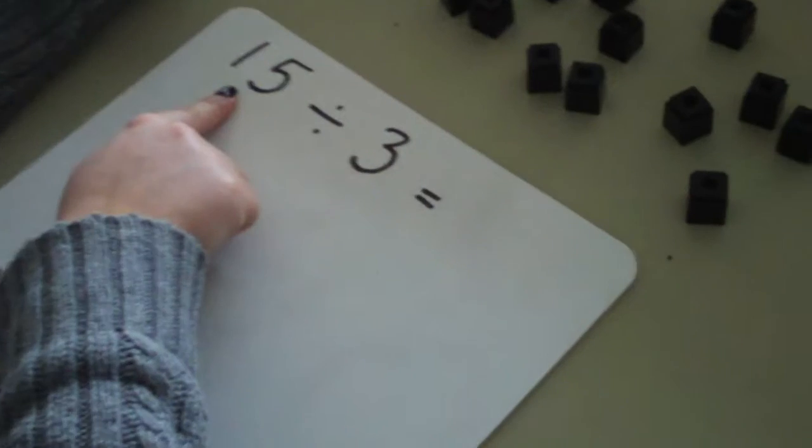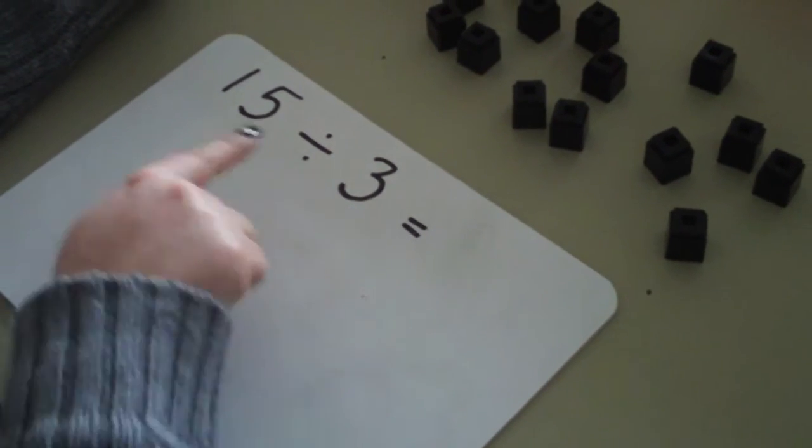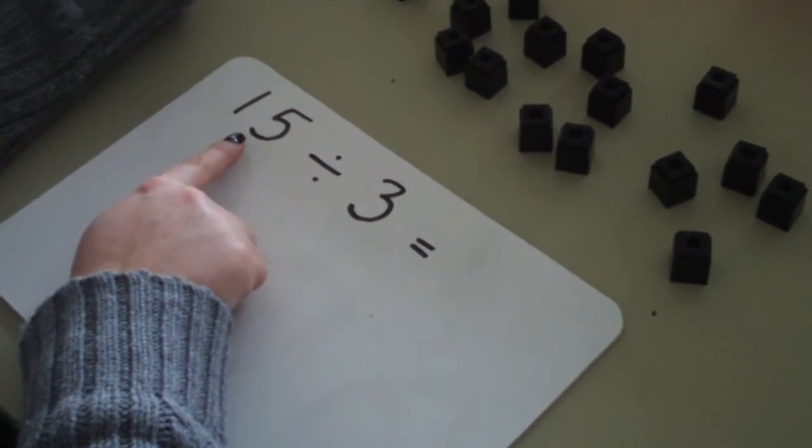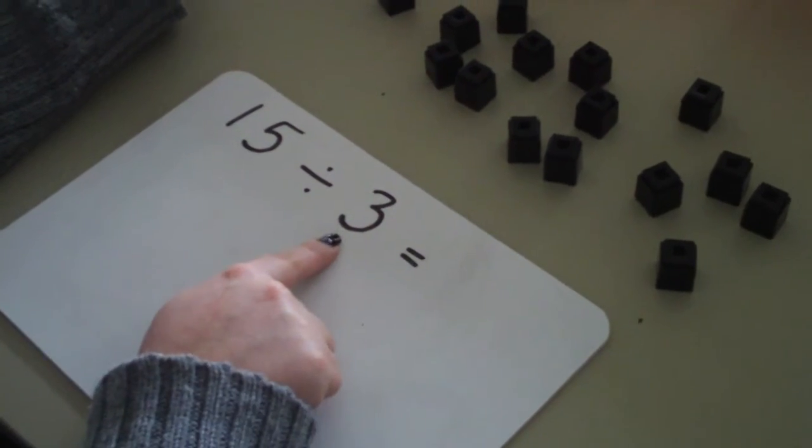Now let's have a look at dividing. Dividing is the same as sharing. 15 divided by 3. So I need to share 15 cubes into 3 groups.